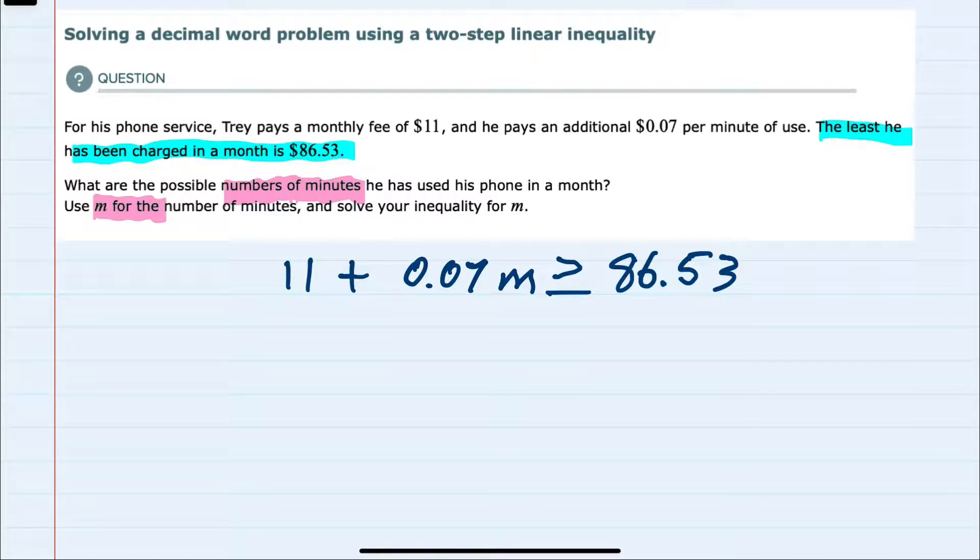always being greater than or equal to $86.53, because it's always been at least that. And we're asked to solve for M to see how many minutes he uses.